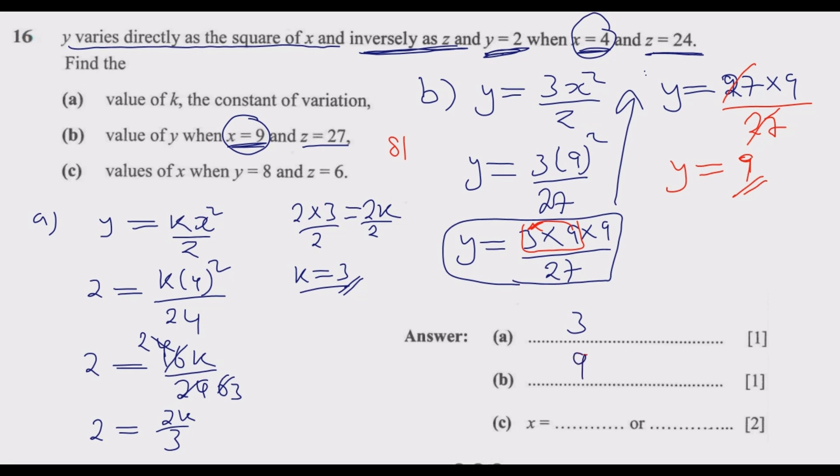We go to question C, values of X when Y equals 8 and Z equals 6. So this is C. I'm going to create more space so that we have enough space to work on. We know Y is 8, then Z equals 6, and we're asked to find X. Now we know the constant of variation is 3. So we start with this equation.